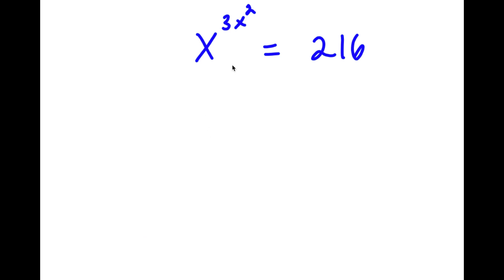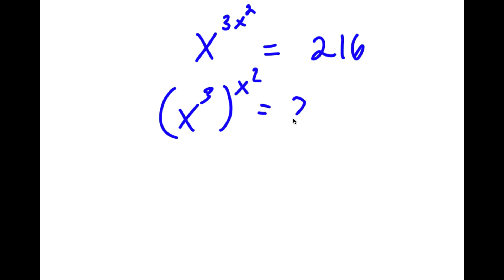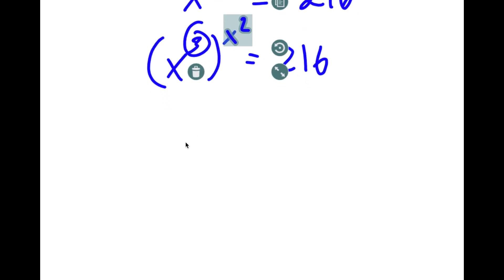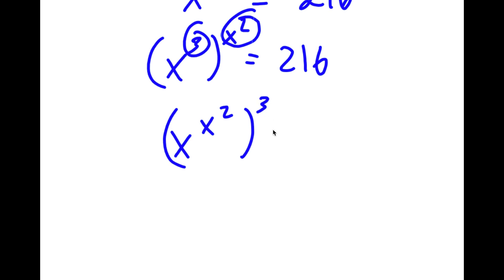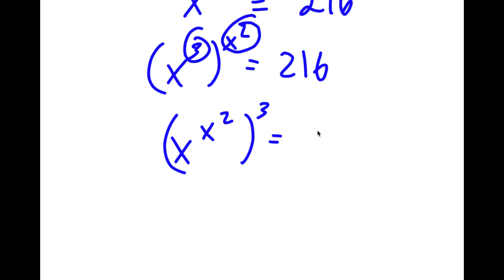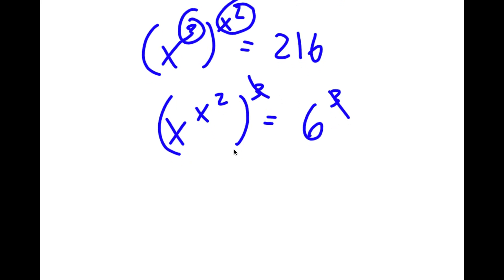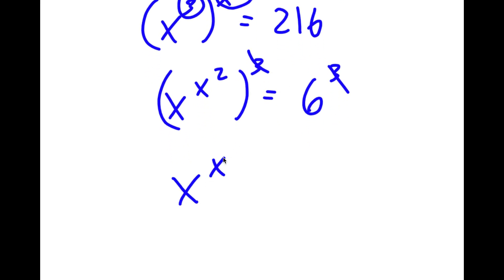So in this problem, I have x to the power of 3x squared is equal to 216. I'm going to first start by rewriting this as x to the power of 3 to the power of x squared is equal to 216. And now I'm going to switch the order of 3 and x squared. So this is the same thing as x to the power of x squared to the power of 3 is equal to 216, which I'm going to rewrite as 6 to the power of 3. Now these two 3s can simply cancel out, so now I have x to the power of x squared is equal to 6.